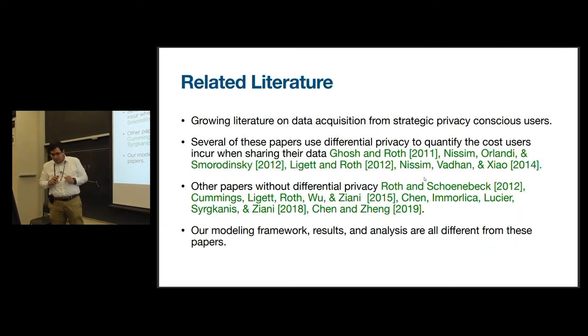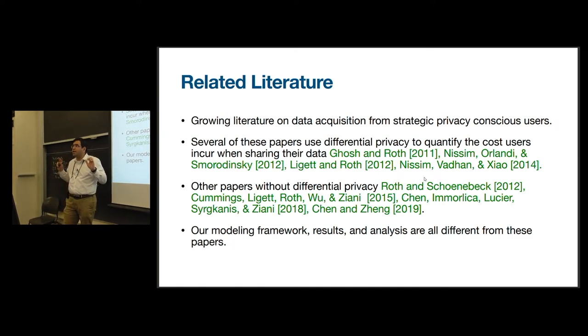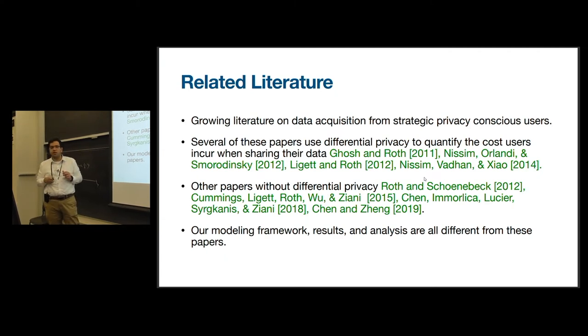Before jumping to the first part, data market architecture, I should mention that there is a growing literature on data acquisition from privacy-sensitive users. Due to the interest of time, I'm not going to go over the details. The papers listed here are by no means representing all the works. Several of these works use differential privacy, but there are many other interesting papers that use different notions of privacy. For instance, a very interesting paper uses the idea that users decide on the accuracy of the data they provide as a measure to control their privacy. Our work basically differs in terms of framework, results, and analysis from these works.